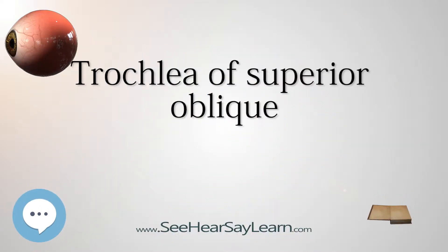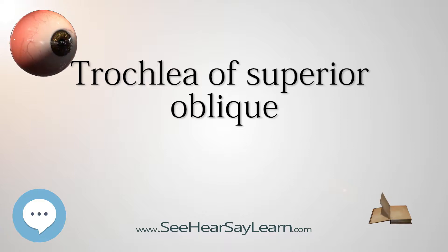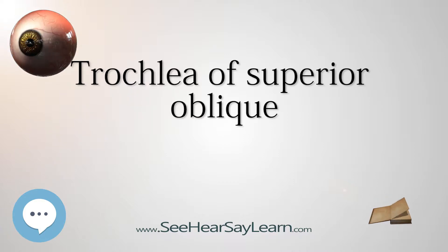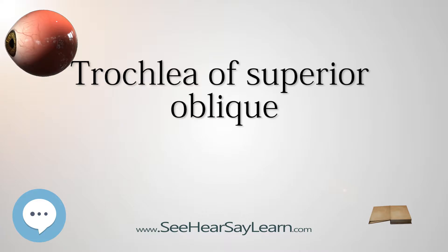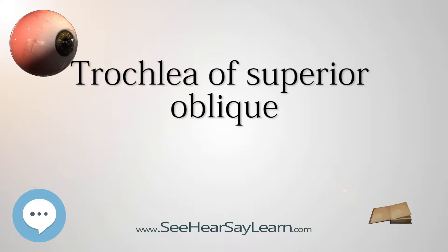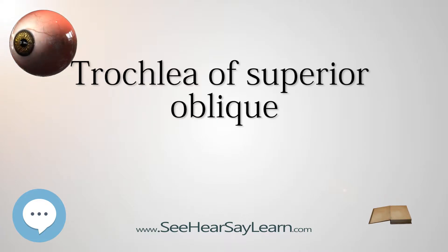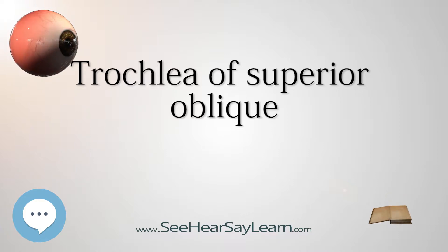The trochlea of the superior oblique is a pulley-like structure in the eye. The tendon of the superior oblique muscle passes through it. Situated on the superior nasal aspect of the frontal bone, it is the only cartilage found in the normal orbit. The word trochlea comes from the Greek word for pulley.